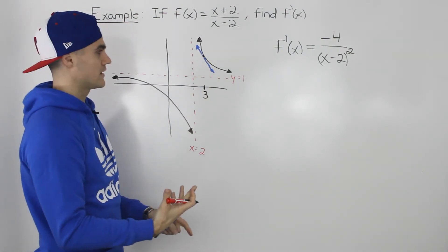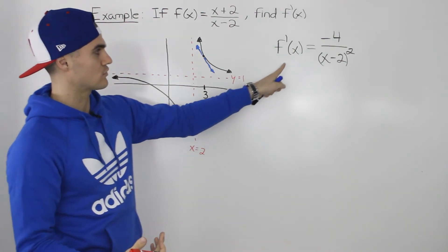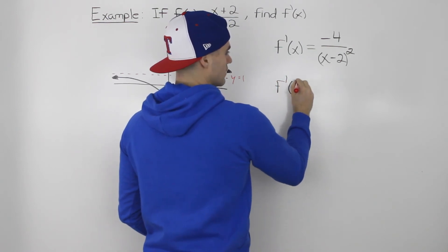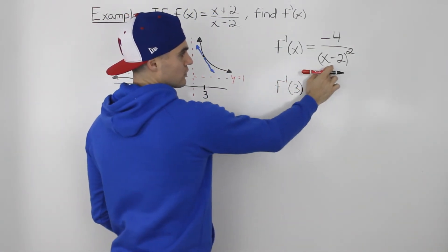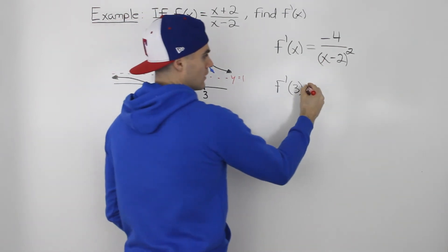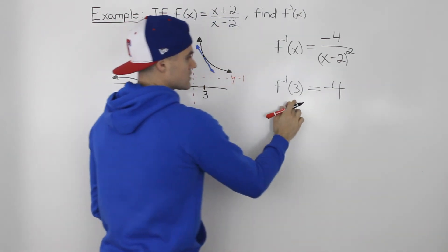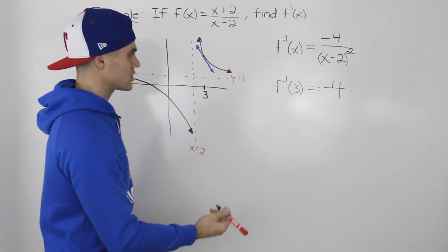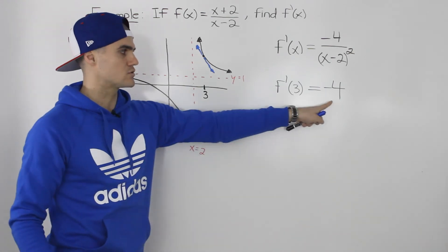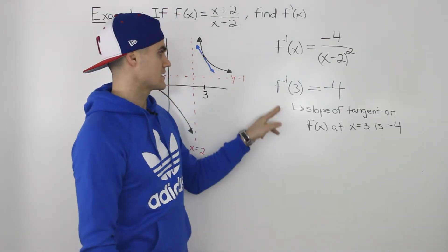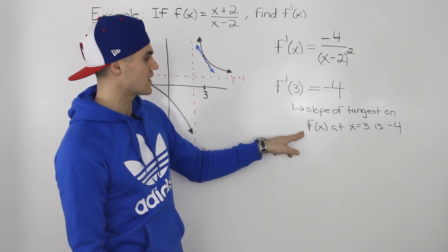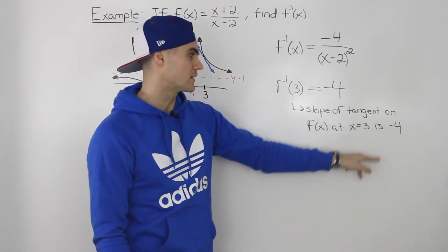To find the slope of that tangent, we plug x=3 into the derivative function, finding f'(3). Plugging 3 in: 3-2=1, 1²=1, so we get -4/1 = -4. This means the slope of the tangent at x=3, the slope of this blue line, is equal to -4. So f'(3)=-4 means the slope of the tangent on f(x) at x=3 is -4.